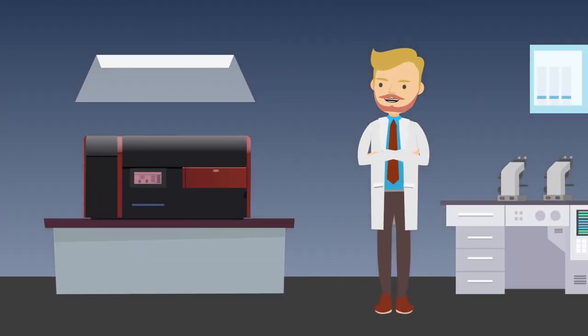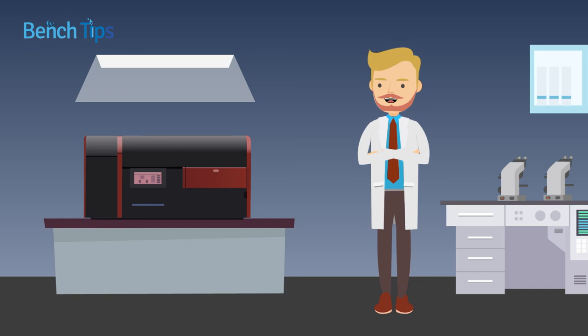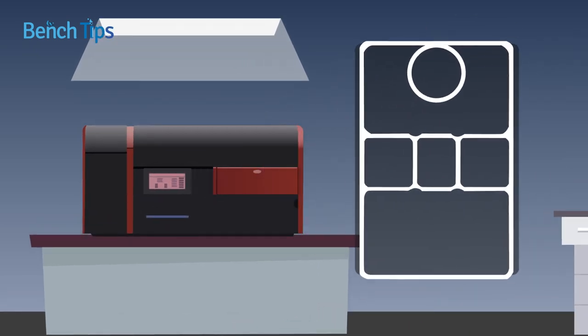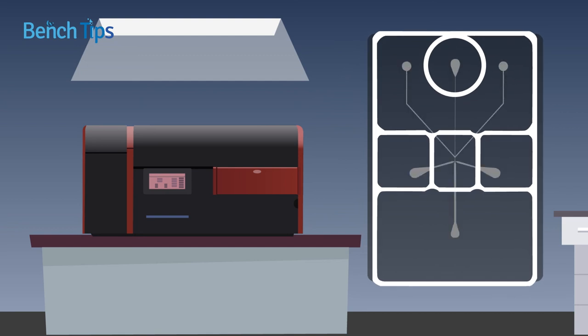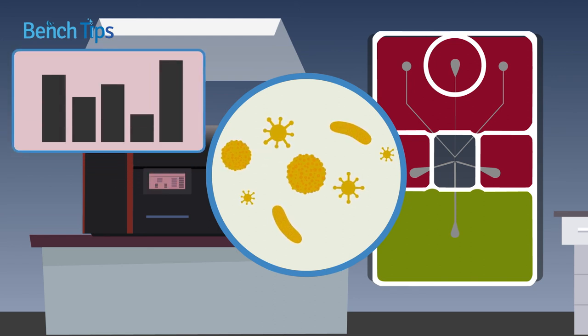As well as providing better quality cells, flow shift cell sorting offers several other advantages over conventional techniques. First, because the technology is based around a small, disposable microfluidic chip, the sample, sheath fluid, and waste are contained throughout analysis and sorting. This removes the risk of sample-to-sample contamination or contamination to the instrument itself, enhancing data quality.